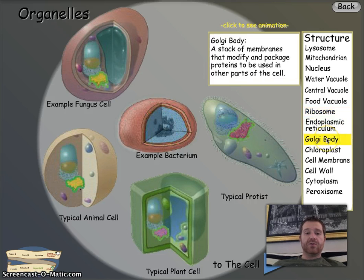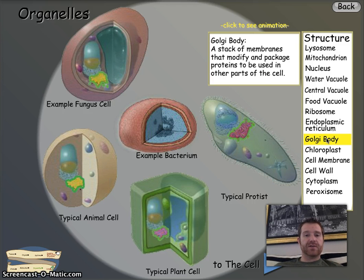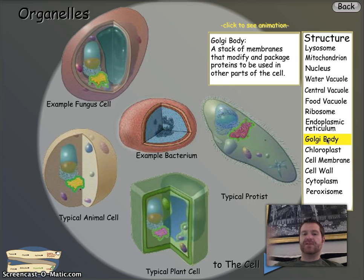Finally, the Golgi body, which was kind of hard in my rap. For the Golgi body, put: it packages proteins to be used in other parts of the cell. You can think of it as the cell's mailroom — so it ships stuff out. And it's in both plants and animals.